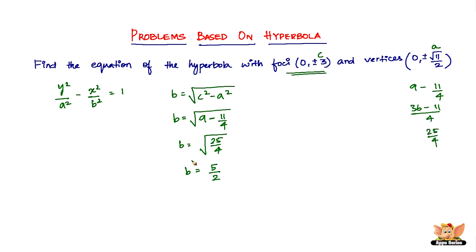So we've got the b, we've got the a. That's all. This is 99% done. All we have to do now, substituting it, we'll have y²/(√11/2)² - x²/(5/2)² = 1.